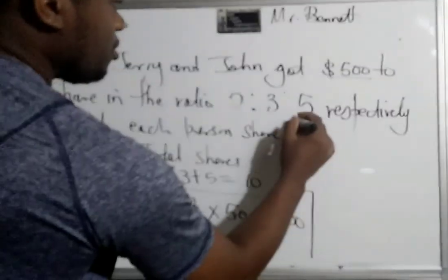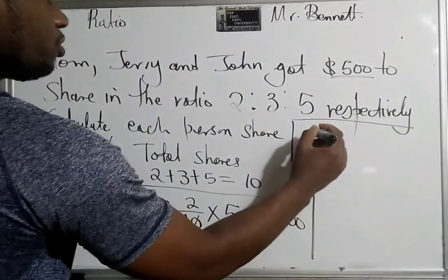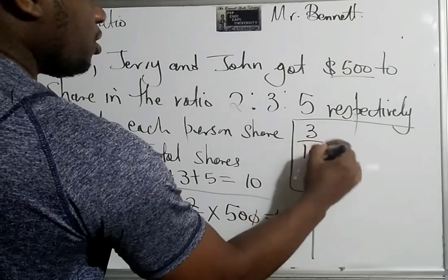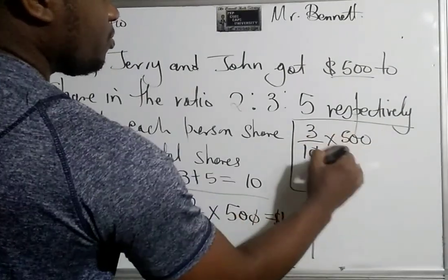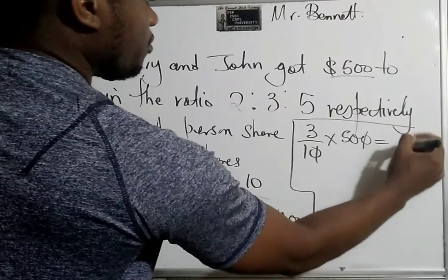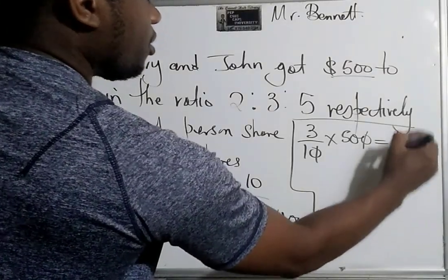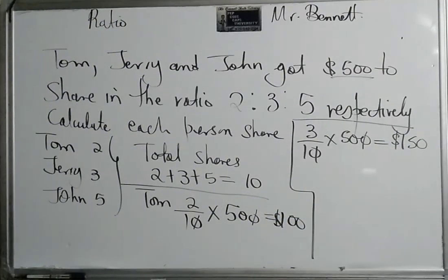Let us calculate Jerry's share. Jerry's share, so it's three out of the 10 times the total, 3 times 50, he gets 150.